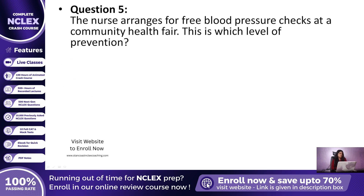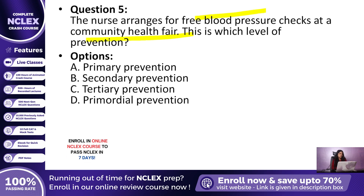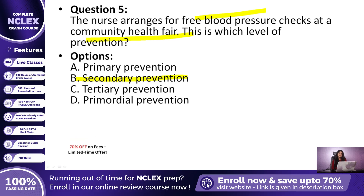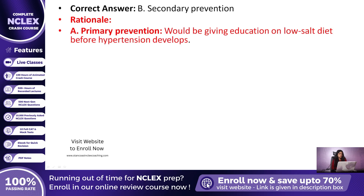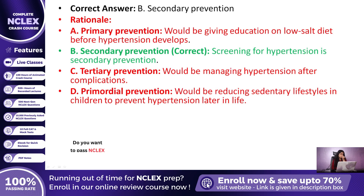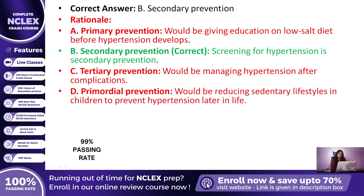Question 5: A nurse arranges for free blood pressure checks at a community health fair. Which level of prevention is this? The correct answer is B — Secondary prevention. Screening activities like this are always secondary, because they help catch disease early before it causes complications. Primary would be teaching about a low-salt diet, tertiary would be rehab after heart failure, and primordial would be preventing sedentary habits in childhood.